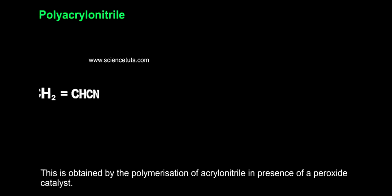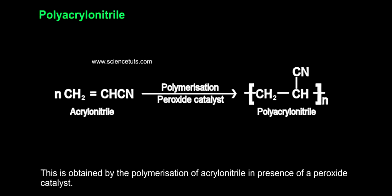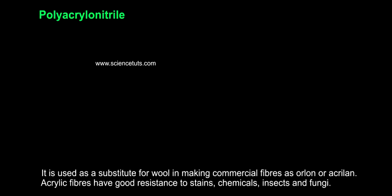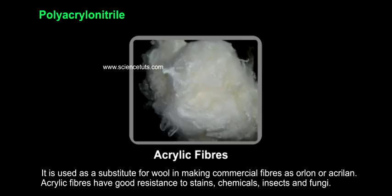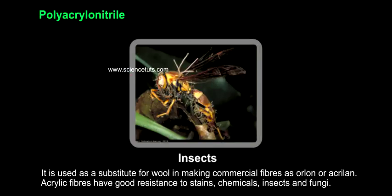Polyacrylonitrile: This is obtained by the polymerization of acrylonitrile in the presence of a peroxide catalyst. It is used as a substitute for wool in making commercial fibers such as orlon or acrylon. Acrylic fibers have good resistance to stains, chemicals, insects, and fungi.